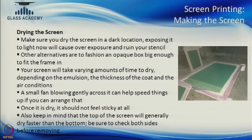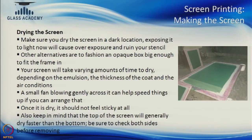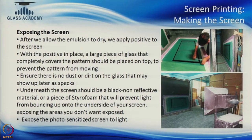Once the emulsion is coated you have to dry it in a dark location. Exposing it to light right now will mean that it will start to solidify. You need to have a good dark room and dry it with air using a few blowers. The sooner it dries the better, and the thickness of the coat is important. You want to keep it flat — not at an angle — because if it is at an angle the emulsion will flow to one side. Once it is dried you go on to the next process: putting the positive on the frame itself.